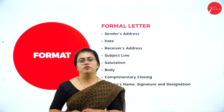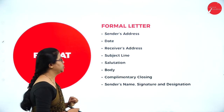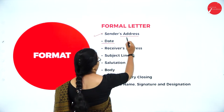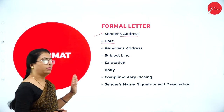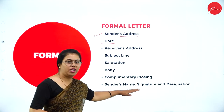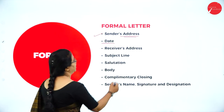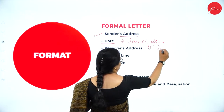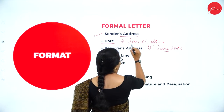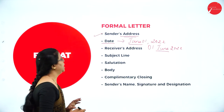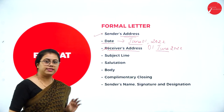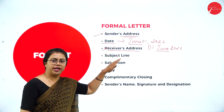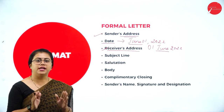We will now understand the format of these letters. For a formal letter, it starts with the sender's address, then comes the date in elaborate form — for example, June 1st 2022 or 1st June 2022. Then comes the receiver's address. If you know the receiver's name, please write it, and below that, write the designation of the receiver. Address doesn't mean only the address; you need to include the designation as well — what post that receiver holds.